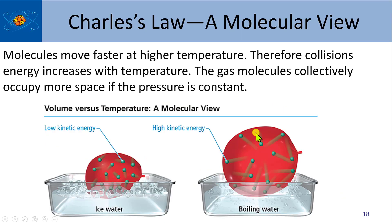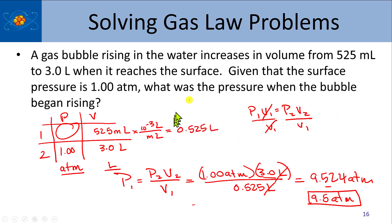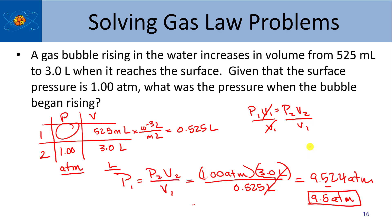You can always predict which direction an answer will go based on your understanding of gases. If you put a balloon in the freezer, you know it's going to get smaller at lower temperature, so the change in volume should be negative. Similarly, looking back at the bubble problem, it went from a small volume to a large volume, so you expect the initial pressure to be higher — and the calculation confirmed that. These problems are nice because if you think of them in terms of a balloon, you can predict whether the answer will be larger or smaller.